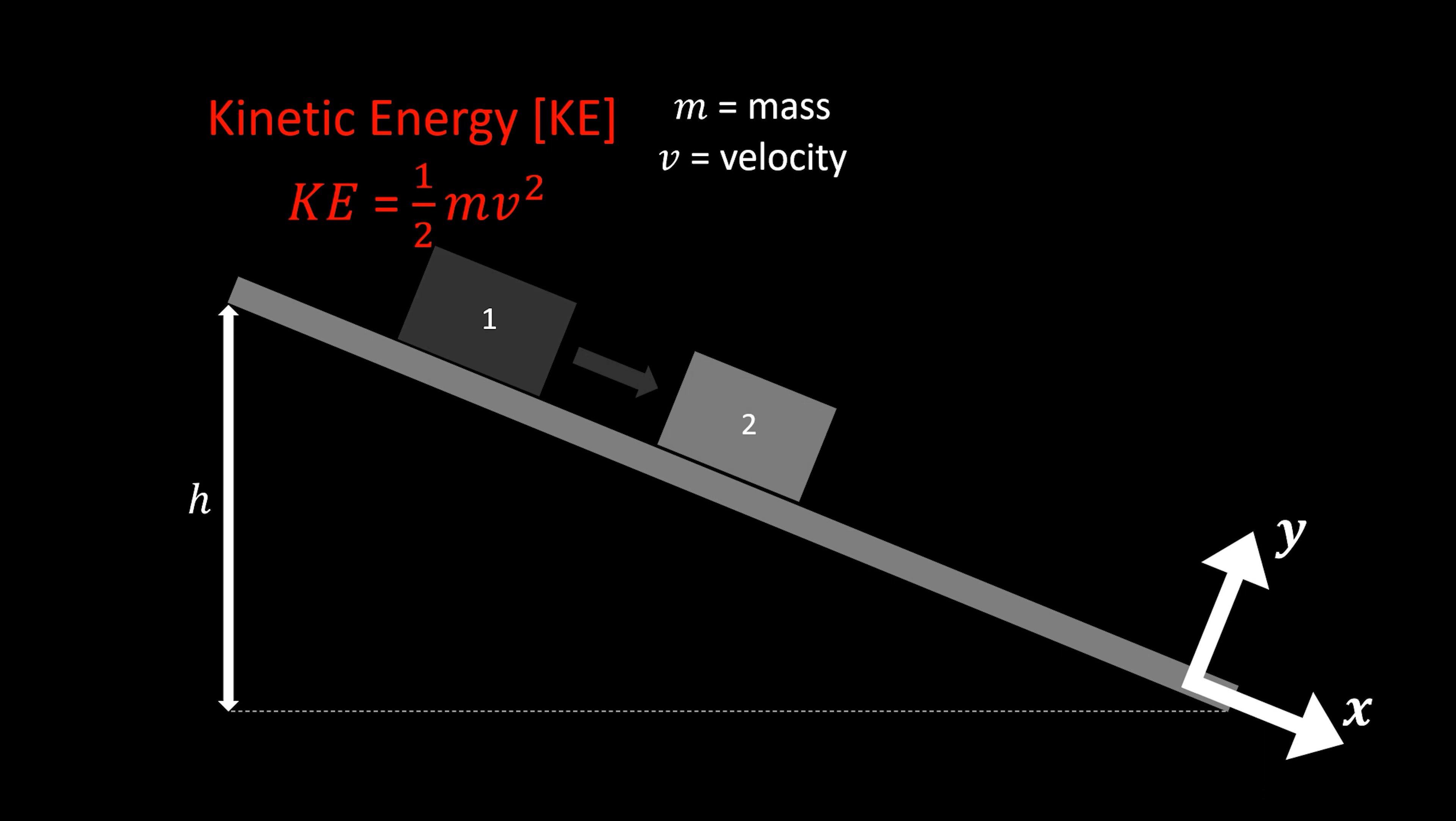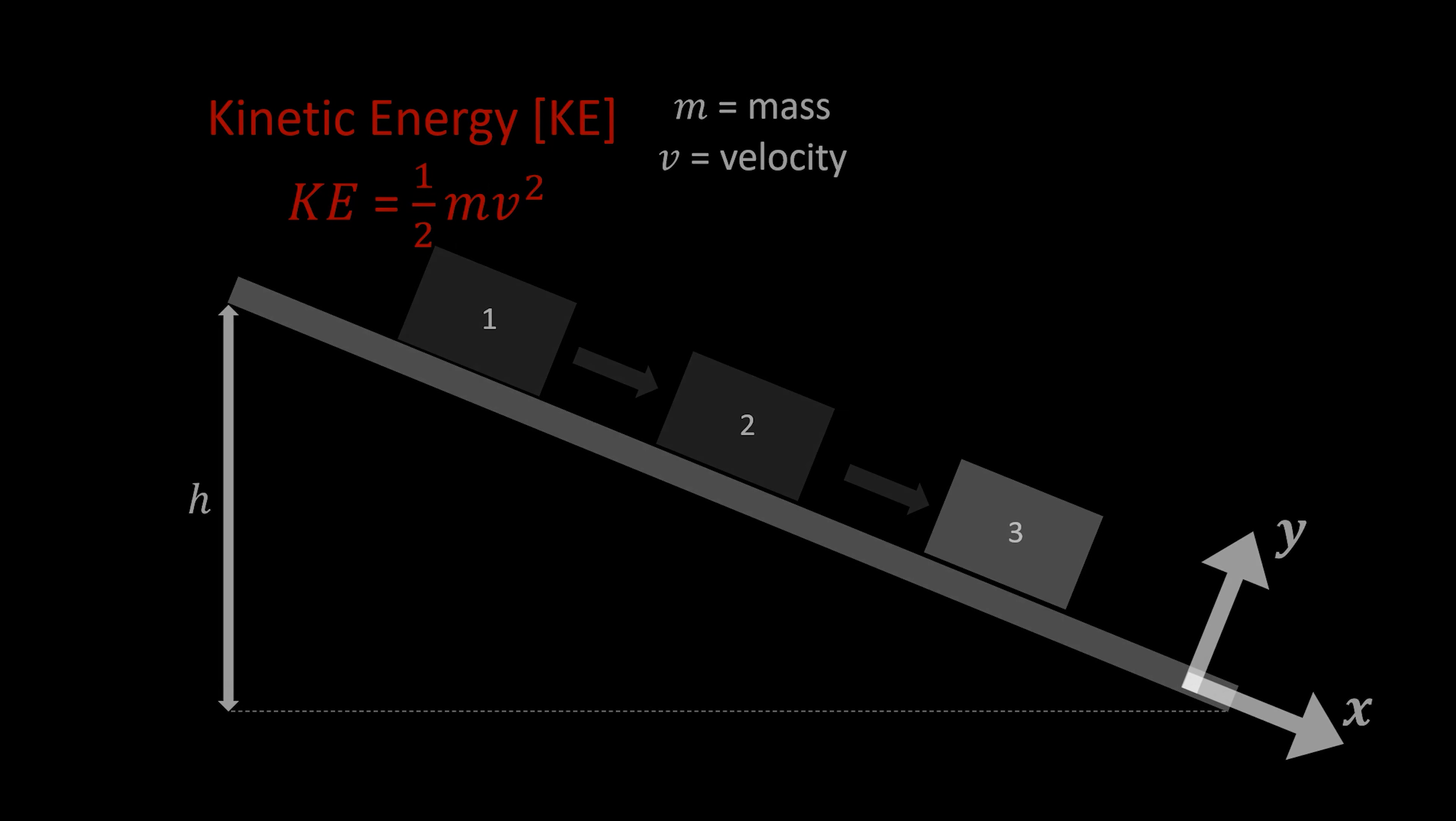And now we see kinetic energy, it's based on the mass and the velocity squared of an object. If the block starts at rest at position one, it's going to gain kinetic energy as it moves to position two, and then as it goes to position three. This is due to the increase in velocity that the moving block experiences as it goes down that ramp. So that's how kinetic energy works.